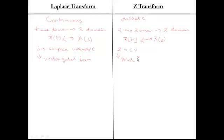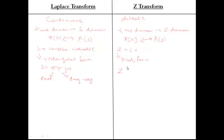S is given as sigma plus j-omega, in which sigma is the real portion and j-omega is the imaginary portion. Similarly, Z is given in polar form as R·e^(jω), where R is the magnitude and j-omega is the phase angle. So in Laplace transform you convert X of t to X of s, where S is a complex variable in rectangular form: sigma plus j-omega. In Z-transform you convert X of n to X of z, where Z is a complex variable in polar form: Z = R·e^(jω).